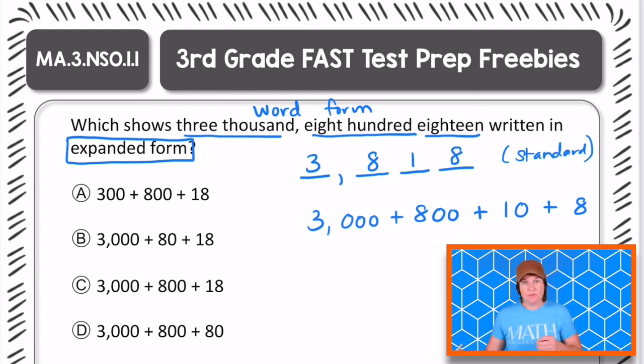Okay, so now that we have the expanded form, let's go look at our answer choices to see which is the best answer for this problem. So A says that we have 300, plus 800, plus 18.